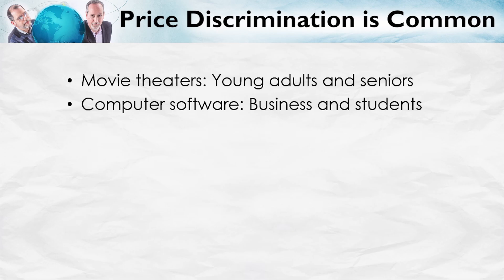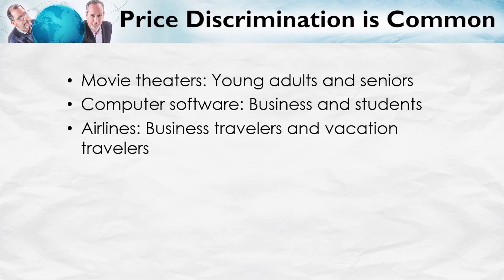Take computer software: businesses and students are often charged different prices. Microsoft offers a significant discount to students who purchase Office. Airlines are another classic example of price discrimination. Airlines want to set higher prices for business travelers, who are more likely to have inelastic demands, than for vacationers, who are more likely to have elastic demands. Price discrimination is typically imperfect. Ideally airlines would ask whether you're a business traveler — that'll be $1,200 — or a vacationer — then only $700. But of course that scheme isn't going to work, because people will just lie. So businesses look for characteristics which are correlated with buyer willingness to pay.